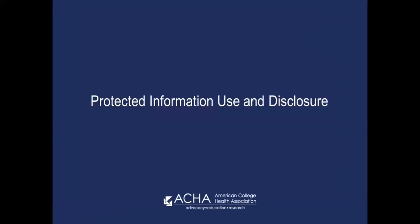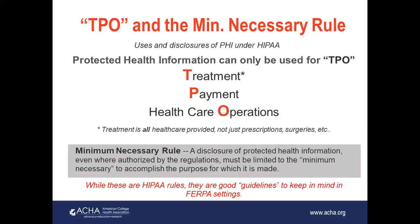Let's look at the use and disclosure of protected health information. When we're talking about use and disclosure of protected health information under HIPAA — and this is also very good guidance to keep in mind for FERPA in our settings — protected health information should be used only for TPO: treatment, payment, and healthcare operations. When we're talking about treatment, we're not talking about just prescriptions or surgeries, but all of the healthcare that is provided to a student, patient, or client in our setting.